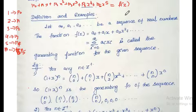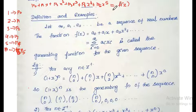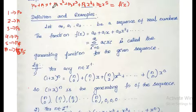This function is called the generating function, which has a generating sequence of p0, p1, p2, p3, p4, p5.